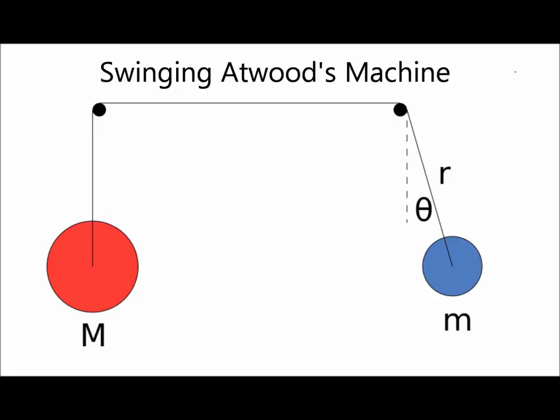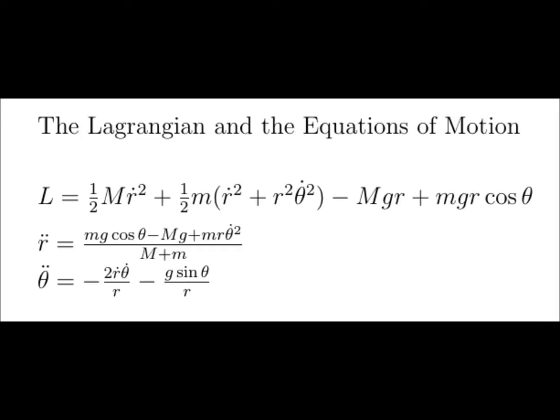If the coffee cup on a string demonstration was frictionless and had no wrapping, then the system would be the same as a swinging Atwood machine, shown here. Essentially the system consists of two masses attached by a string where one of the masses is restricted to movement in the vertical direction while the other is allowed to move in the vertical plane. We can find the equations for kinetic energy and potential energy which allows us to arrive at a Lagrangian for the system. From there we can solve for r double dot and theta double dot.